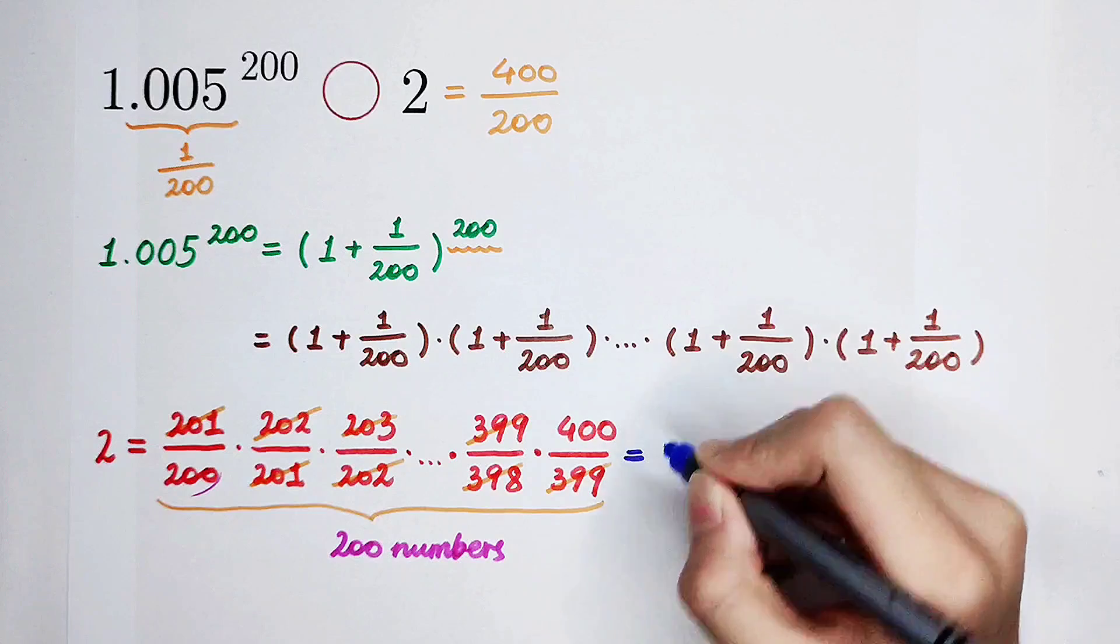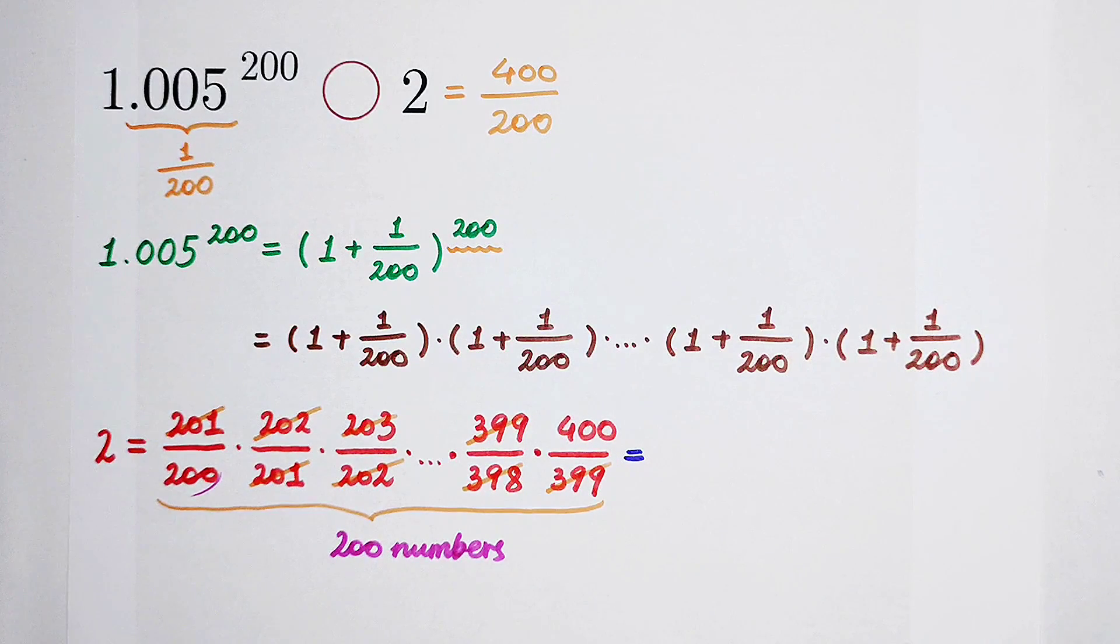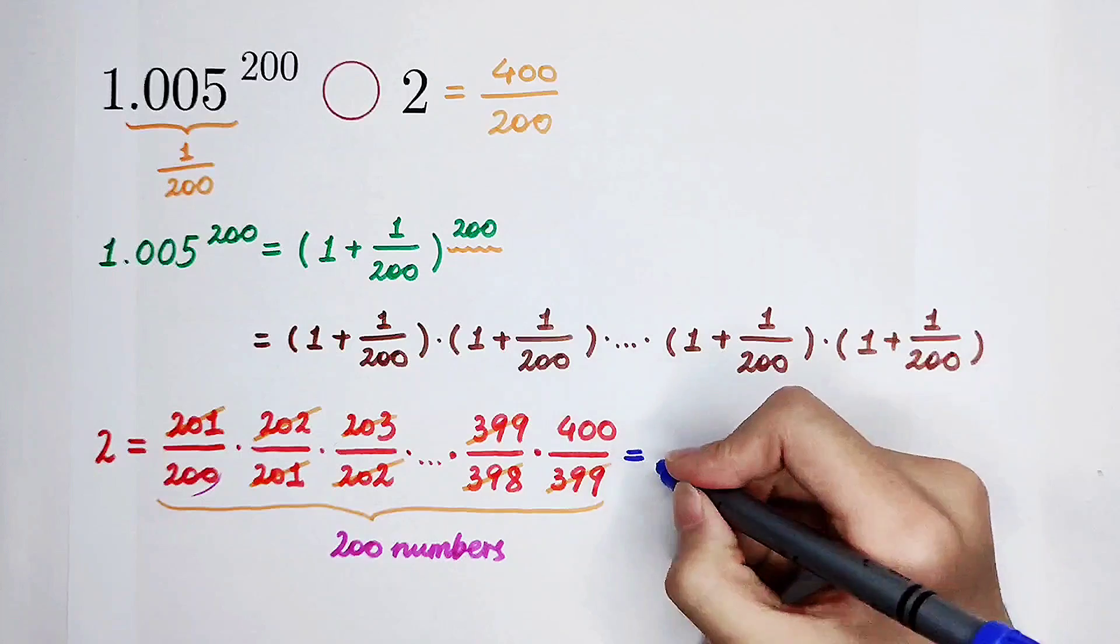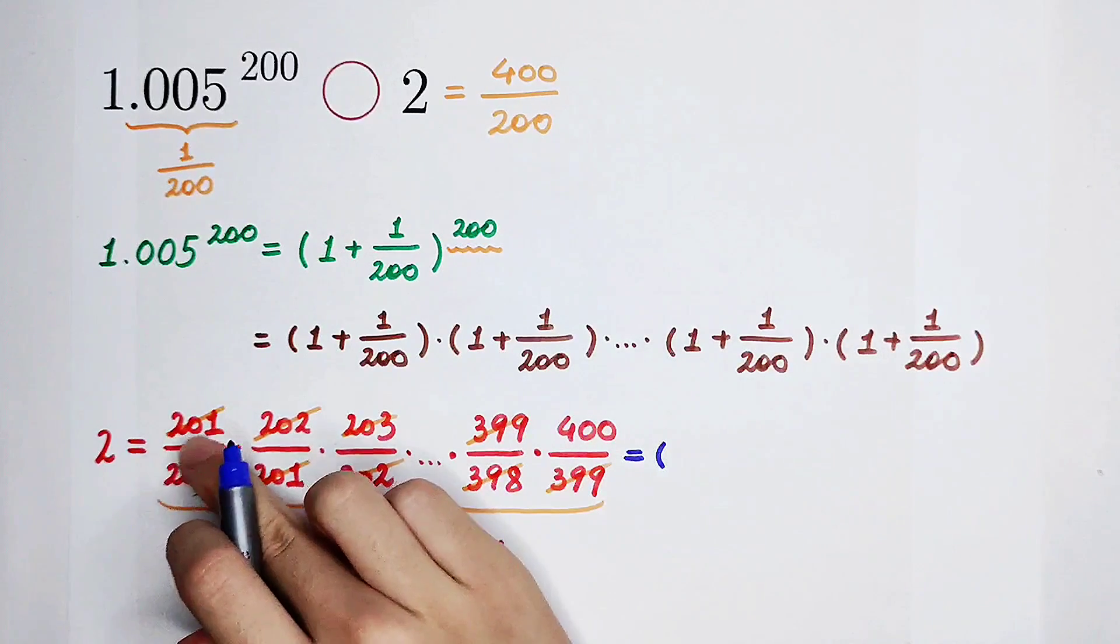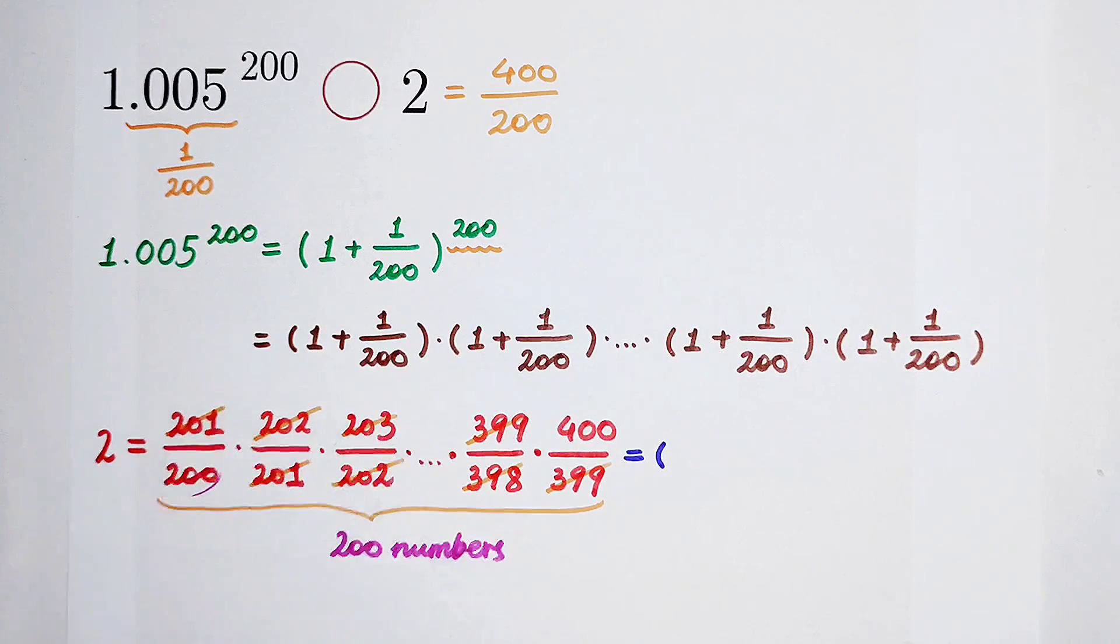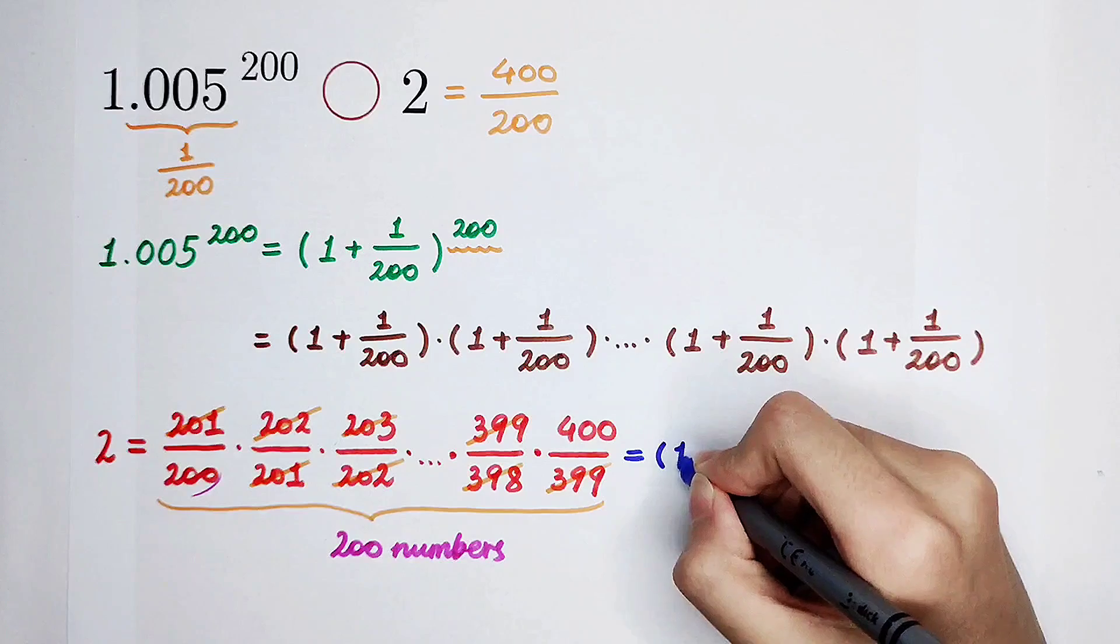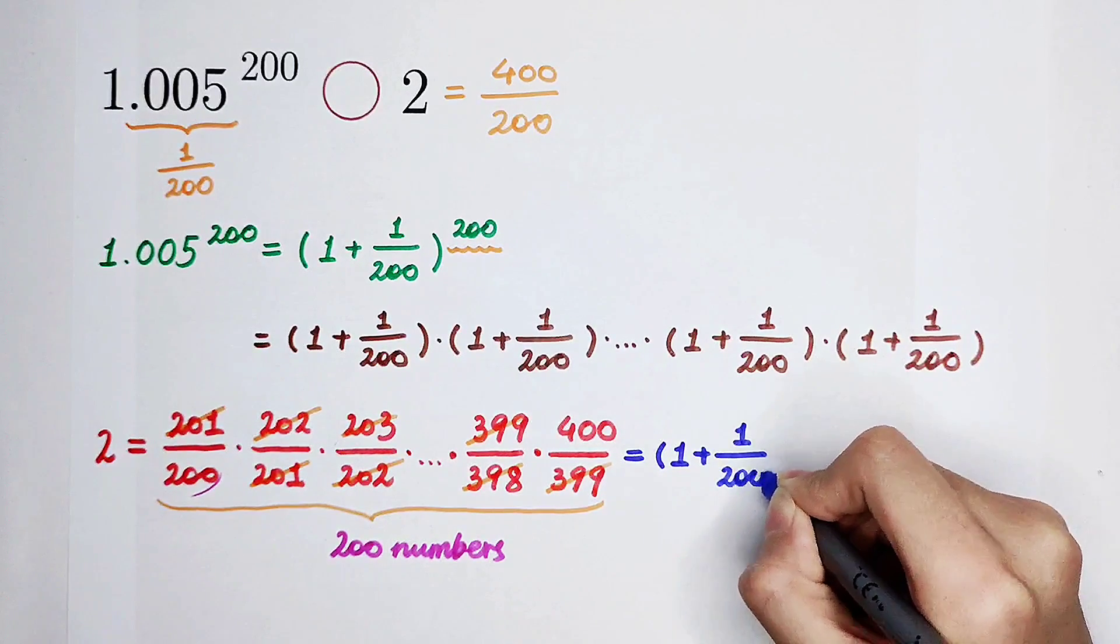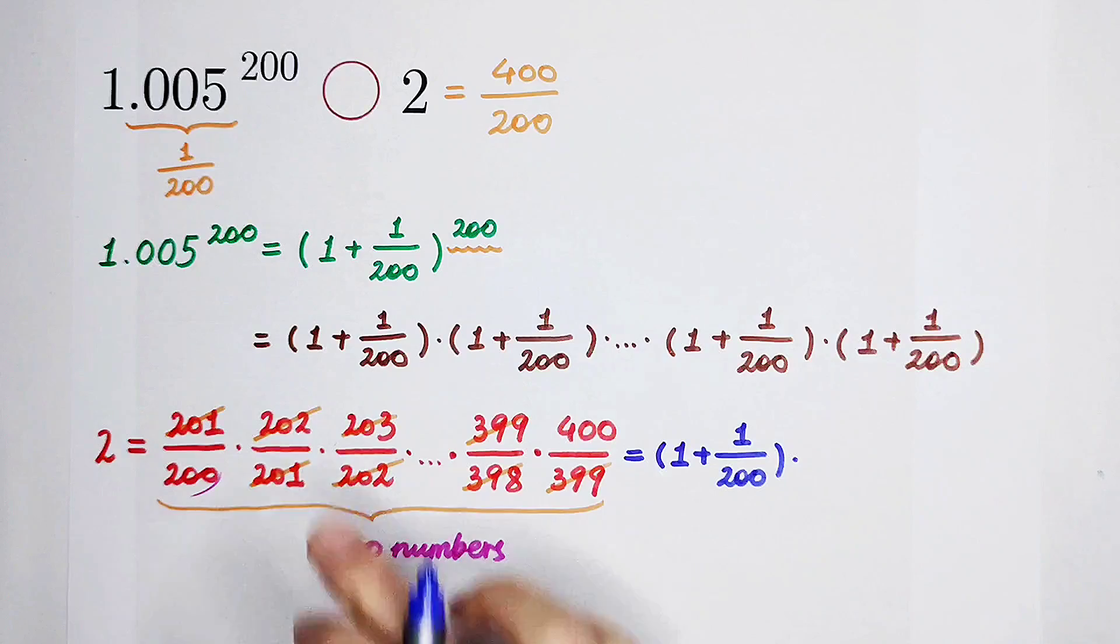Now, we have a problem. How should we write this term as the form, this? The first one, 201 divided by 200, it is 1 plus 1 over 200. It's the same as this.